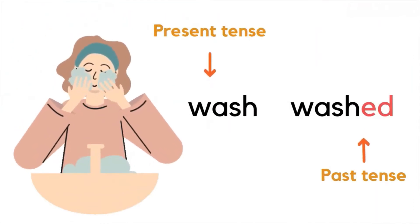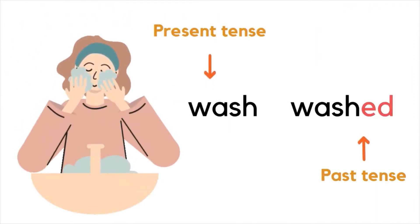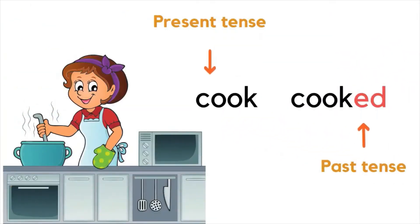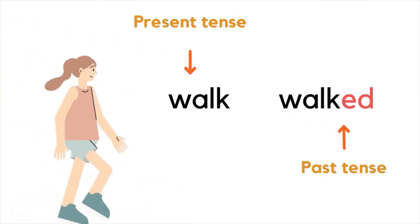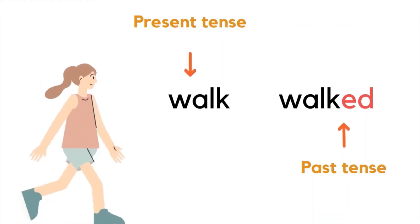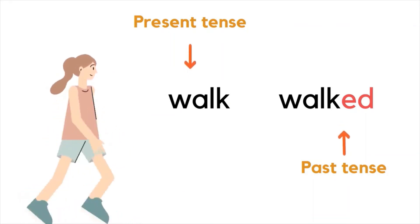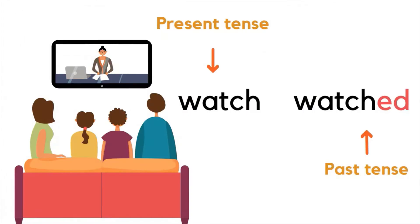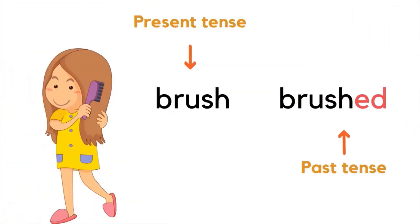Examples of verbs with ED added: wash / washed, cook / cooked, walk / walked, play / played, watch / watched, and brush / brushed.